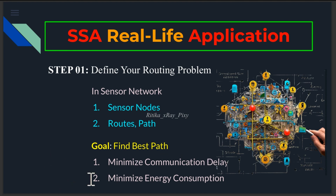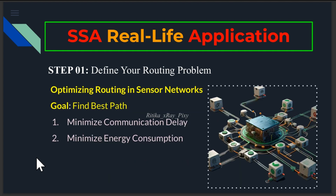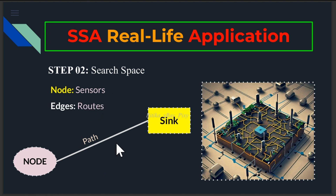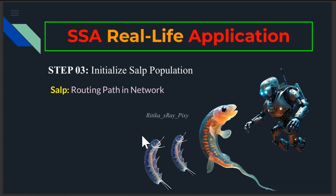We represent the network as the search space, and each possible path from sensor node to sink is a potential solution. This algorithm will explore these paths to find out the best one. Nodes are sensors, edges are connections between sensors — these are the paths or routes. We initialize the population: each salp in the population represents a possible routing path in the network. Initially, we generate different random paths from sensor node to the sink as our initial solutions.